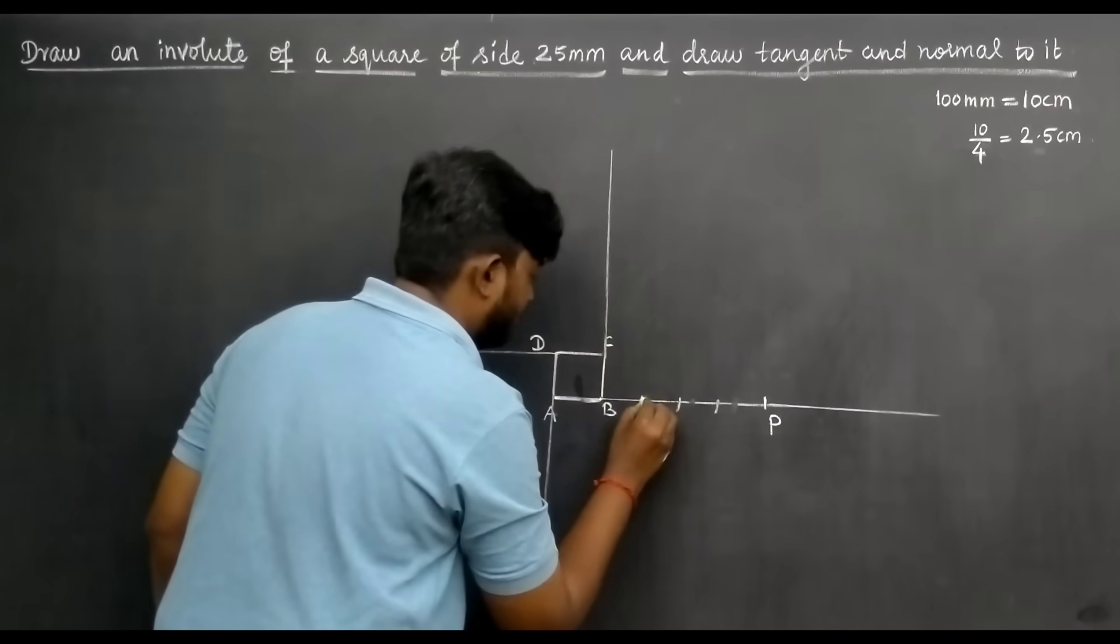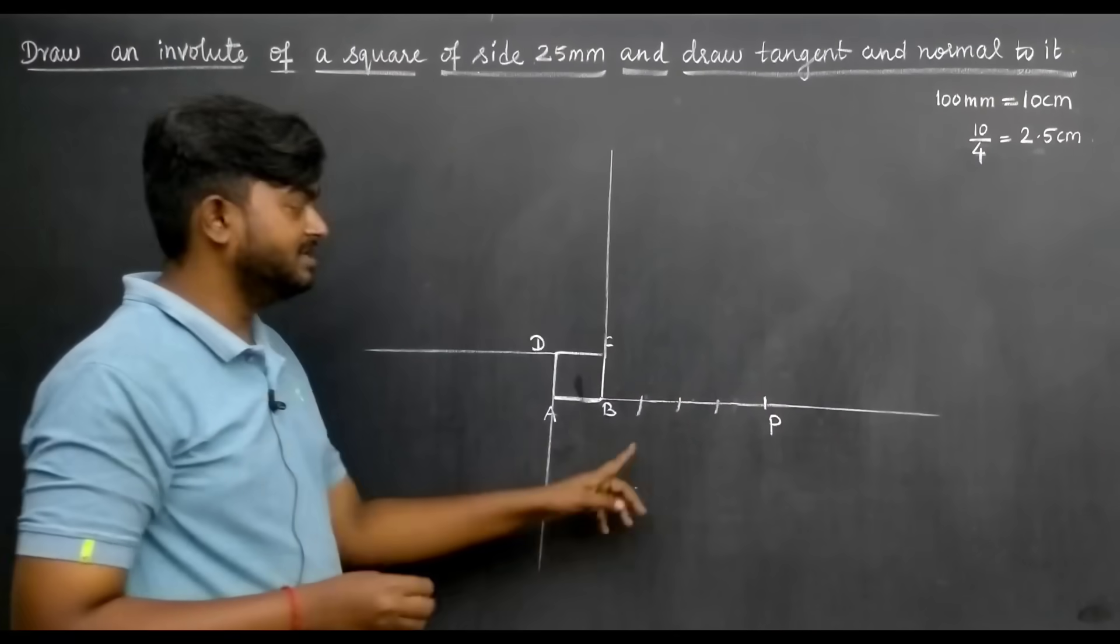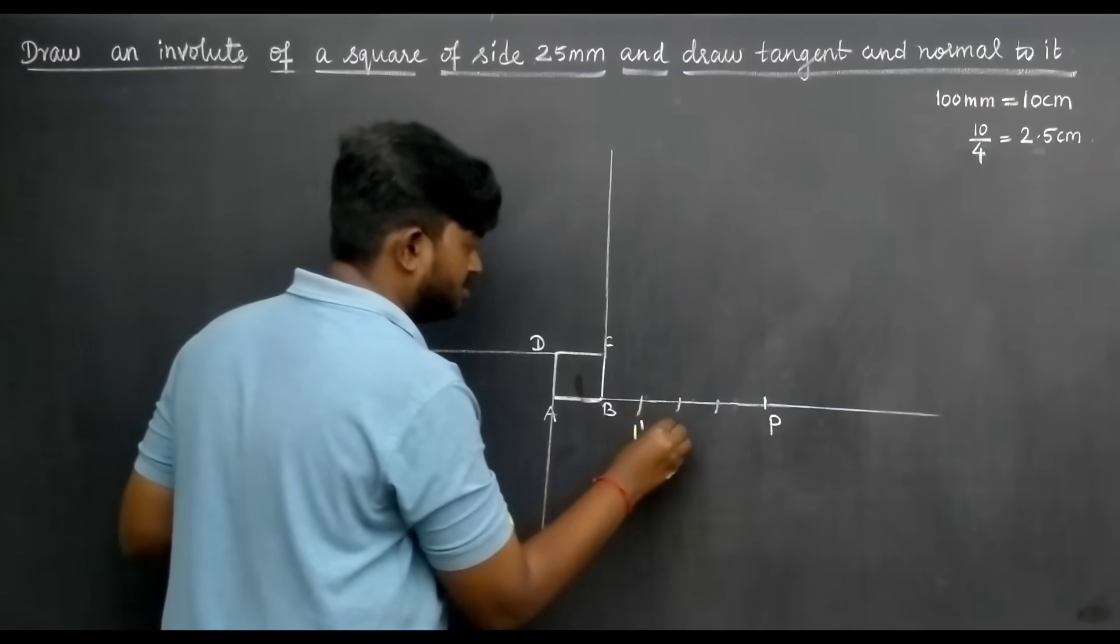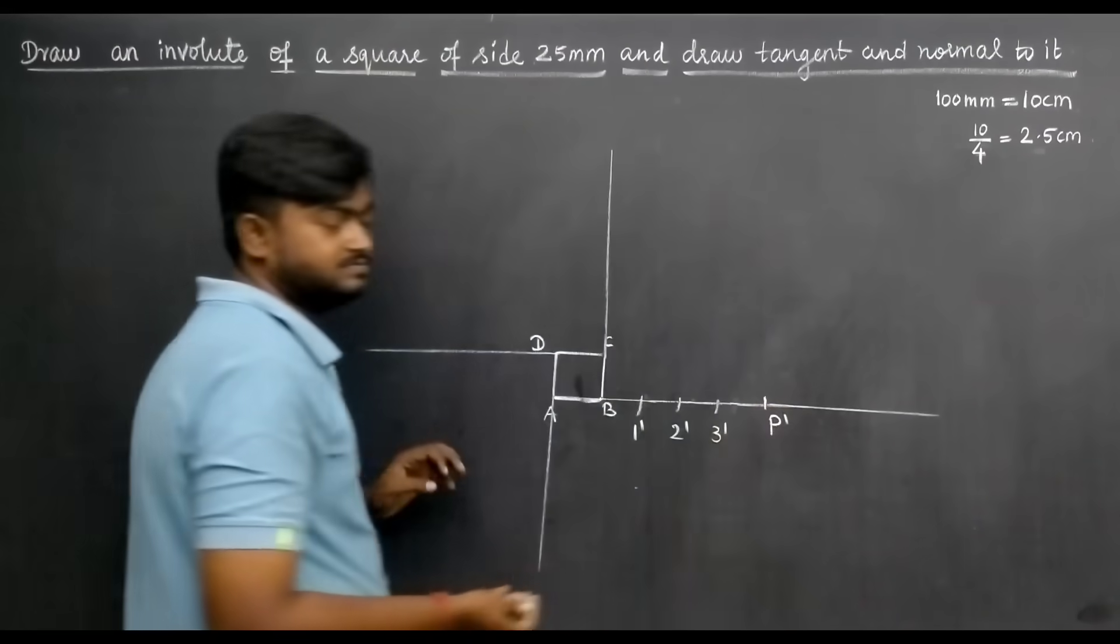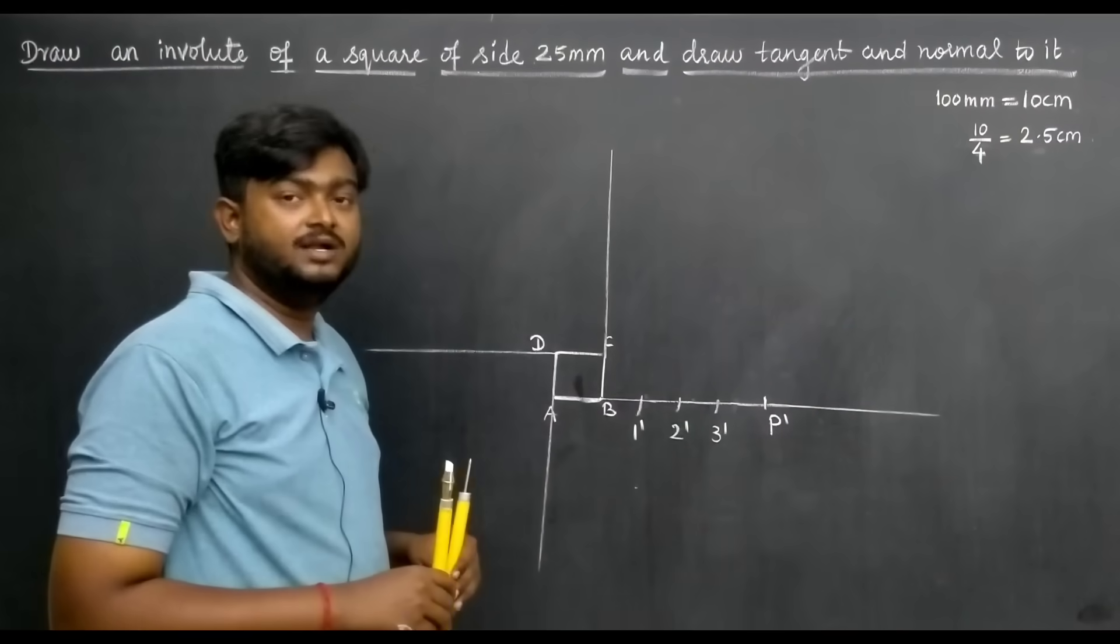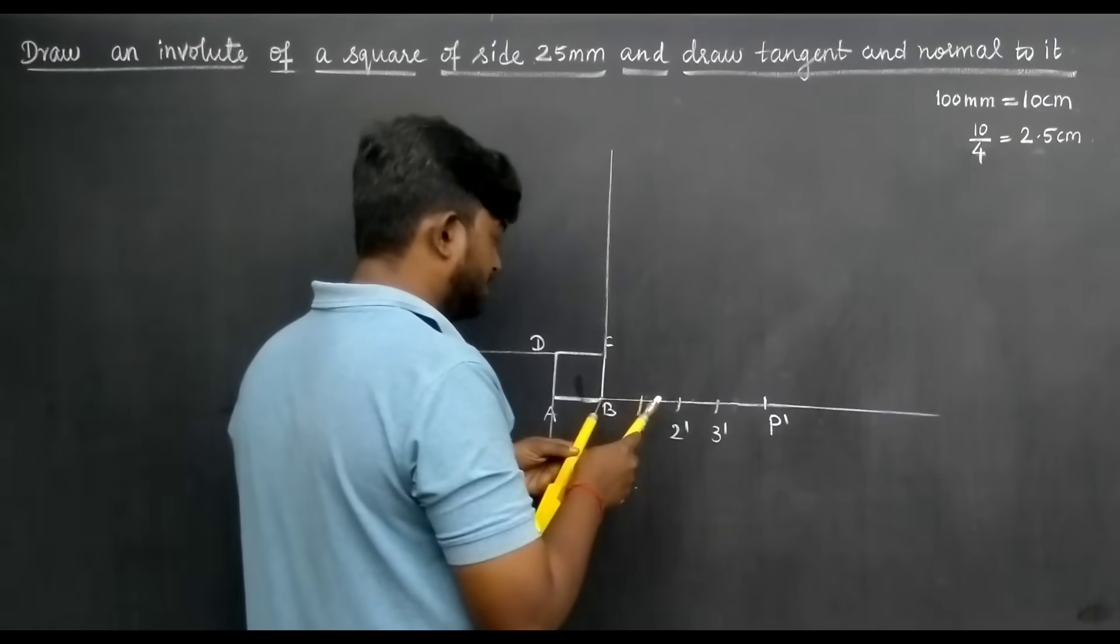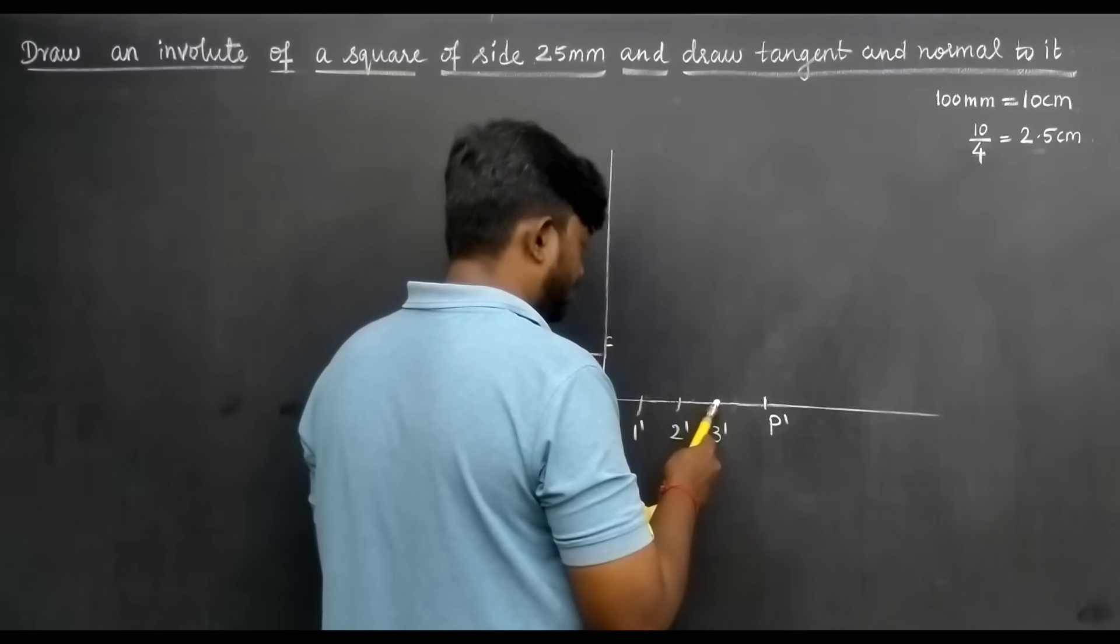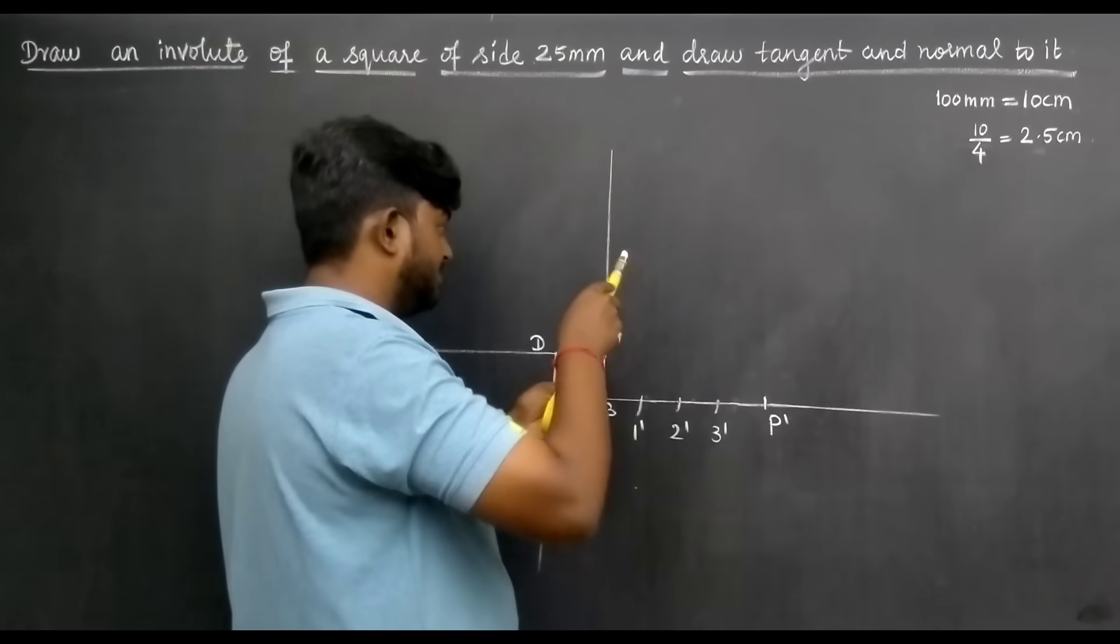Now join the lines. Join 1-dash, 2-dash, 3-dash to point P. The next step is with the compass. Set the compass at B-point, measure to 3-dash, and draw an arc at C-point.